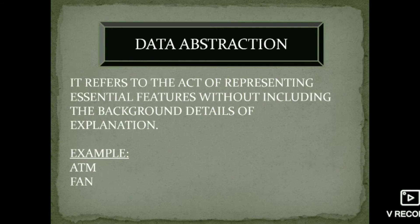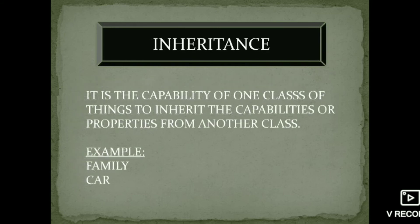Second is data abstraction, also called data hiding. It refers to representing essential features without including the background details or explanations. For example, when you withdraw money from an ATM, you get the amount but you don't know how the ATM machine works internally — that is data abstraction, also known as data hiding.